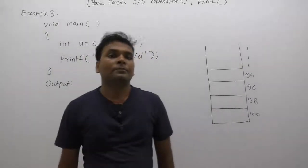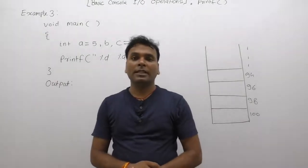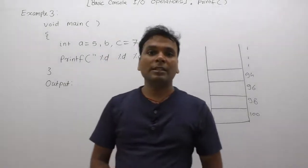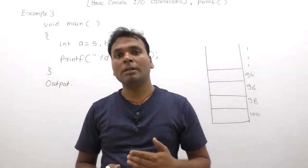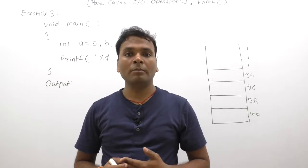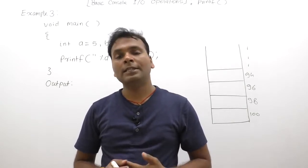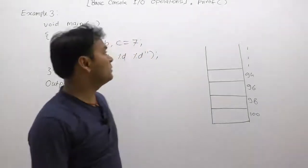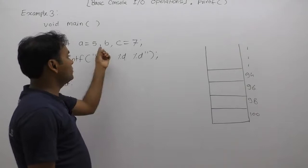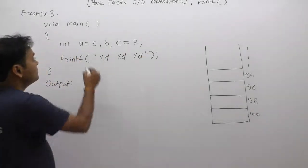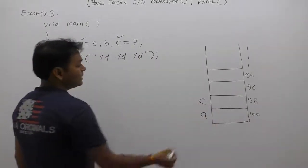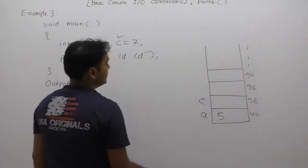In this example, we are taking variable b, but b is not initialized or used. As we discussed, uninitialized or unused local variables will not take any extra memory space — memory is allocated only for used variables. Here, we are using only variable a to store five and variable c to store seven, but we are not using b. Therefore, memory allocation is performed only for variable a and variable c.